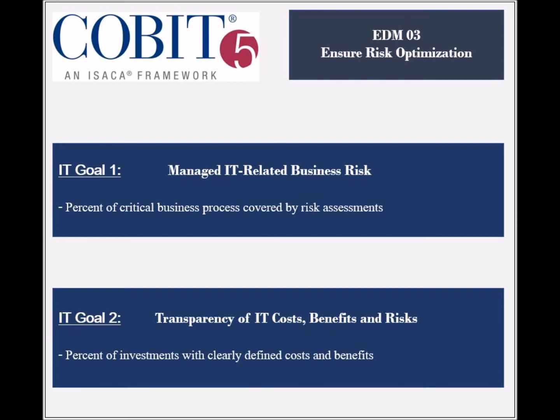The second goal supported by the process is called Transparency of IT Costs, Benefits and Risks. Its achievement is measured by IT investment cases supported by defined and approved costs and benefits, and by the satisfaction level of stakeholders in relation to the transparency and accuracy of IT financial information.